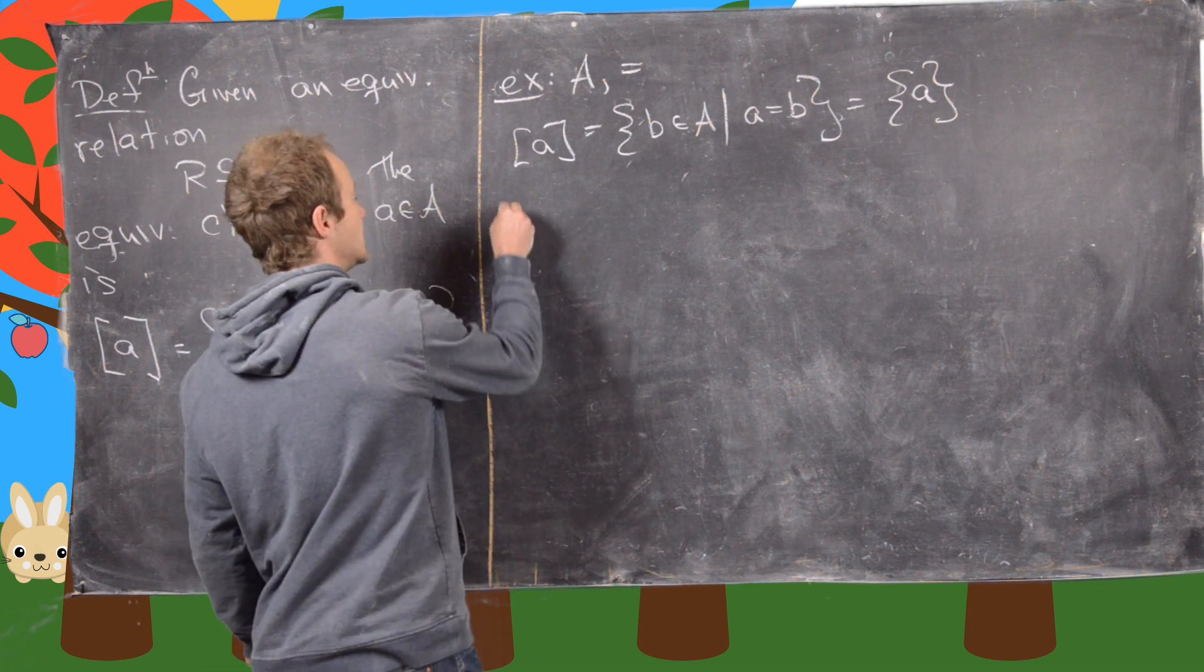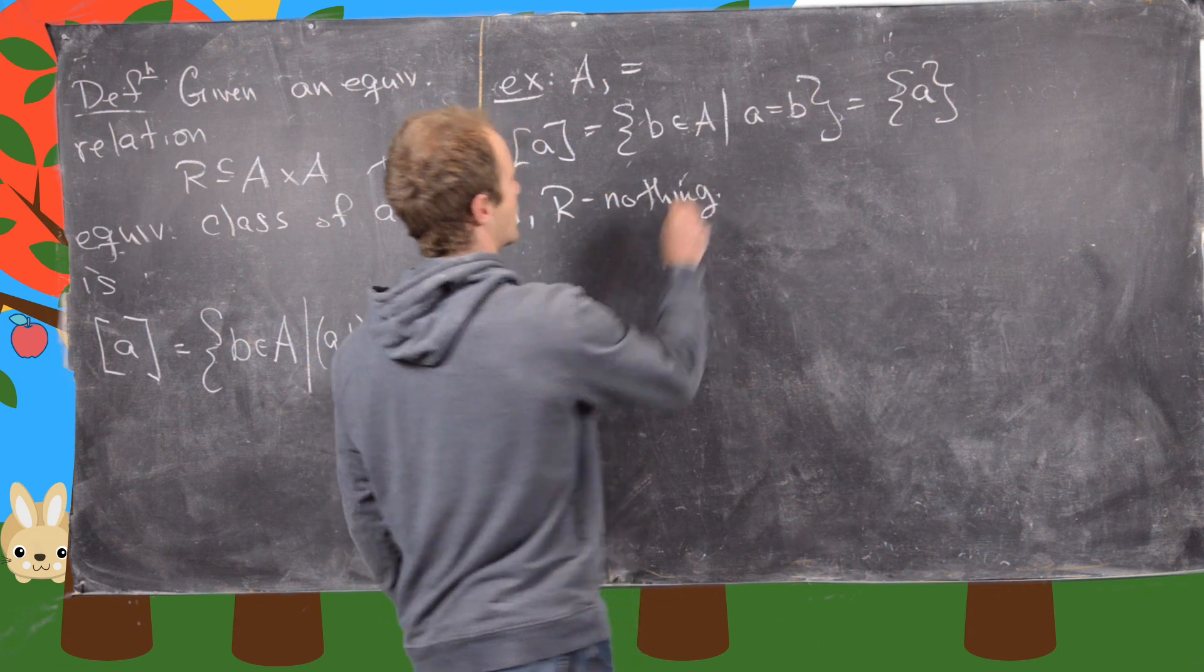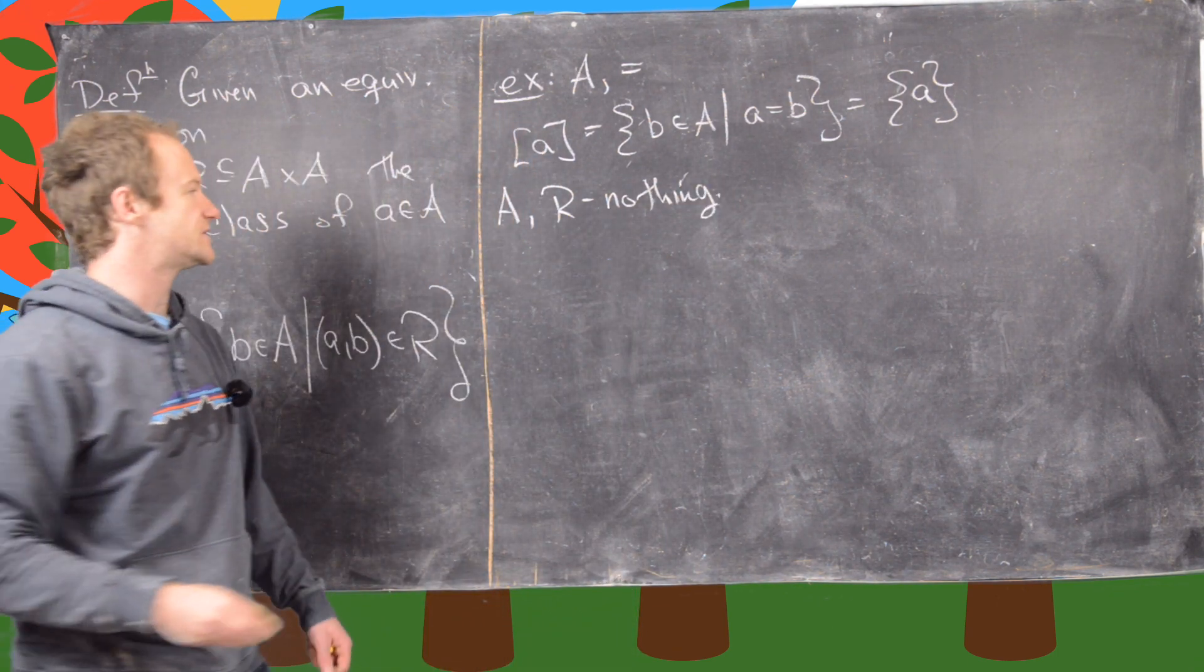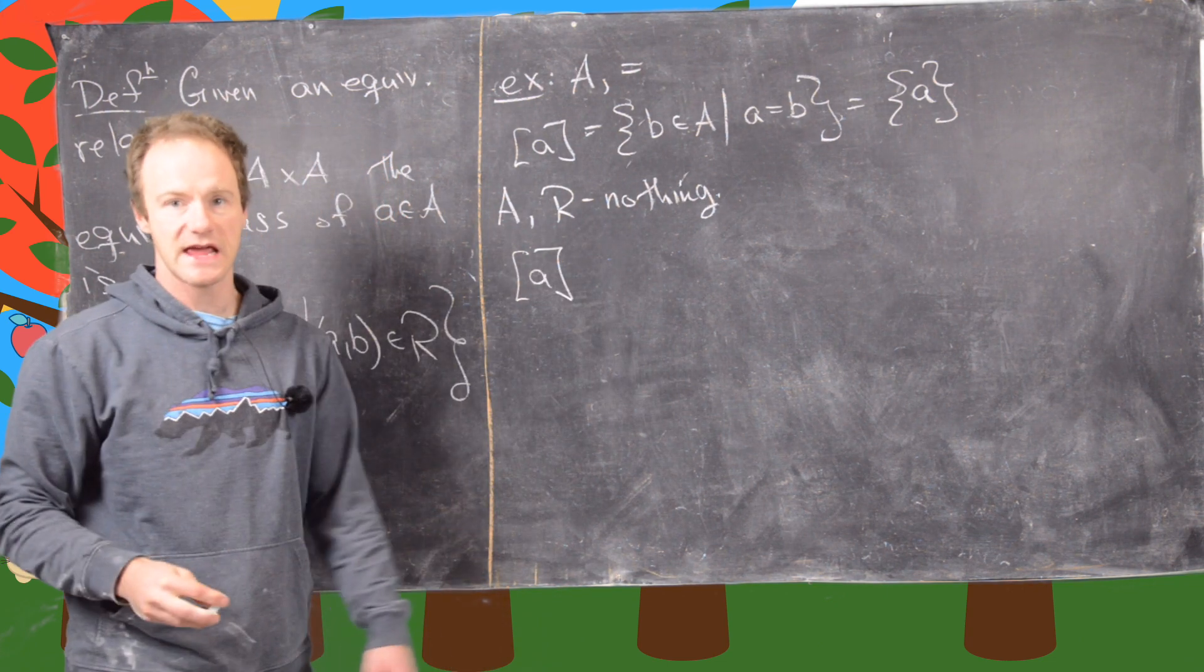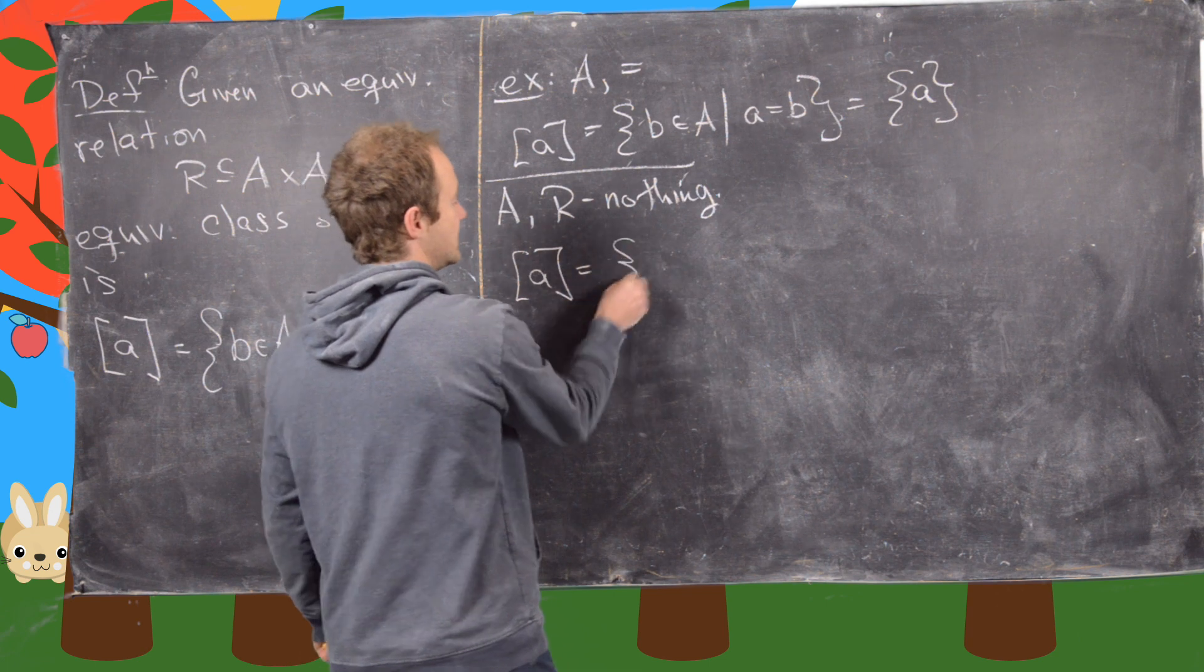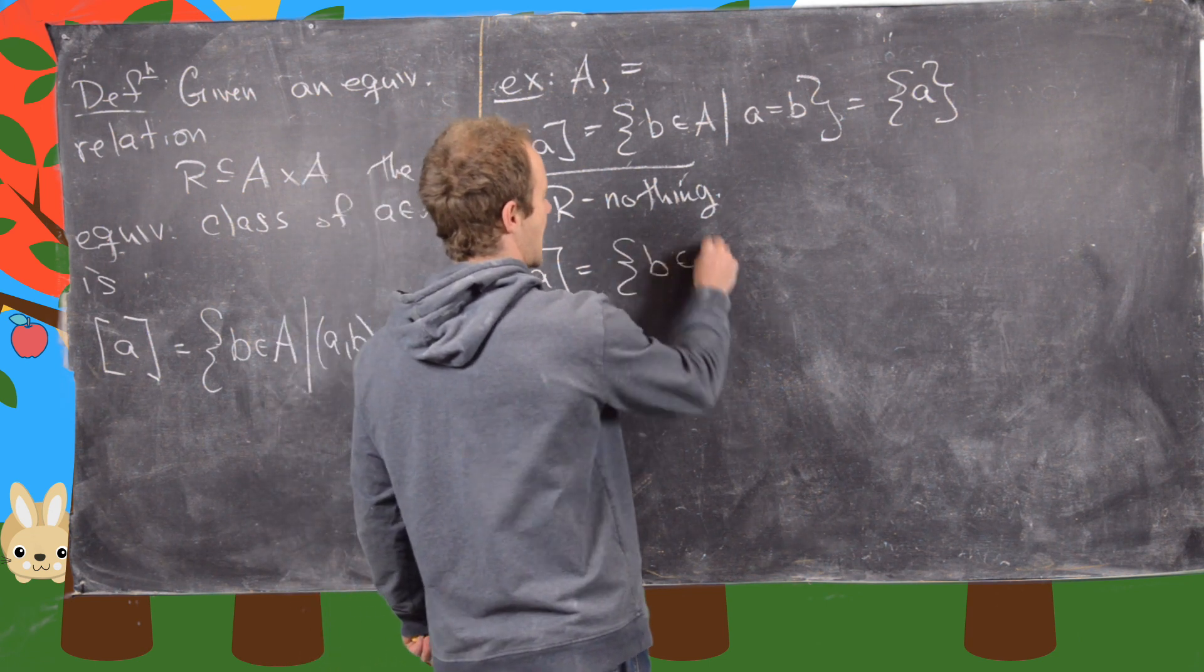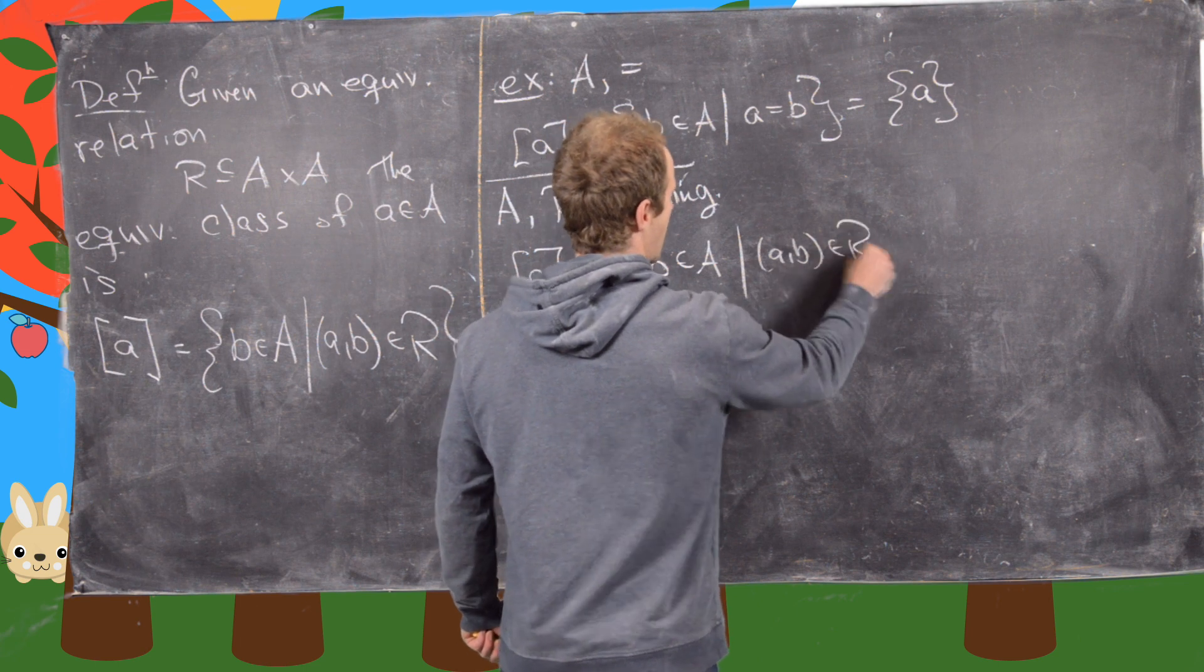Good. Now let's look at A where R is nothing like before. So in other words, everything is related to everything else. And now notice if we take any element A here and we take its equivalence class, this is going to be all B in A such that A comma B is in R.